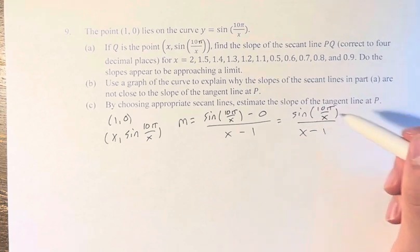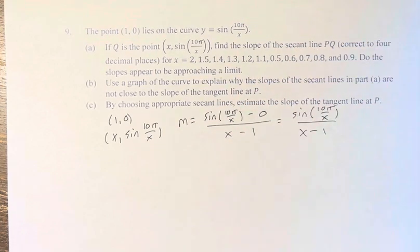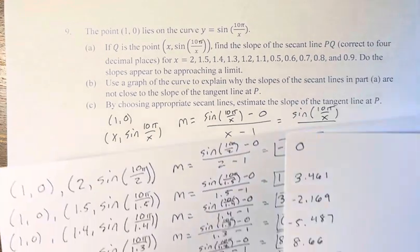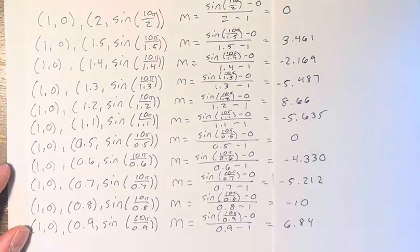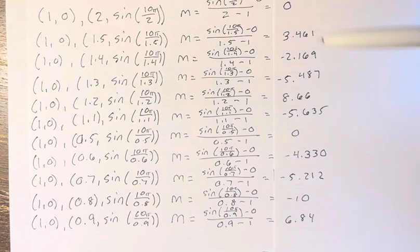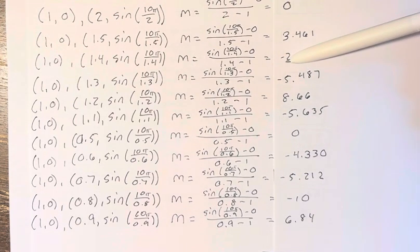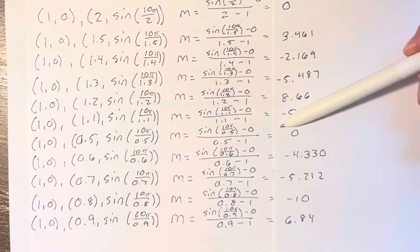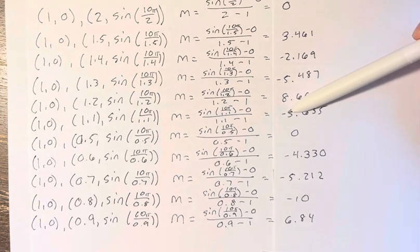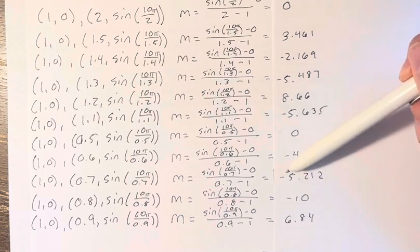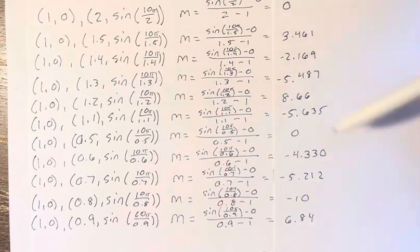We just have to calculate this for these various values of x. So I've done that already and we can see that it's right here. And you notice as these values get closer and closer to 1, we don't seem to be approaching a limit at all. We balance between positive and negative values—we hit 0, negative 10, positive 6—it's all over the place.